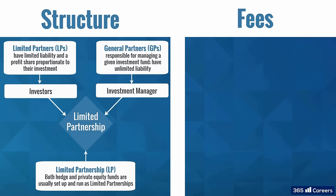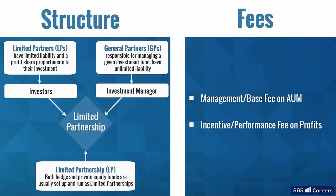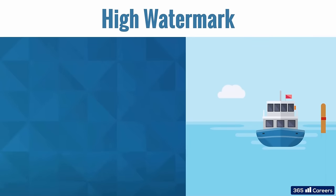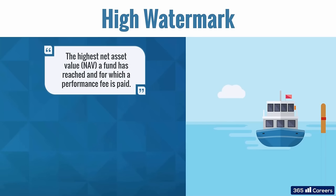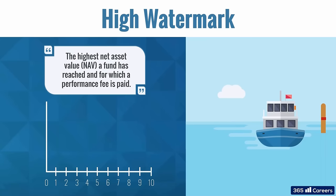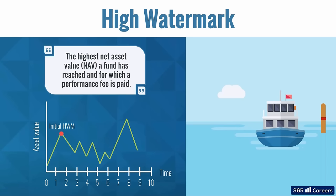The common fee structure of alternative investment funds includes a management or base fee and an incentive, or performance fee. The management fee is calculated annually on assets under management, or AUM. The incentive fee, also known as a hurdle rate, is usually calculated on profits above a certain level of return. Another widely used feature is the so-called high watermark. This is the highest net asset value, or NAV, that a fund has reached and for which a performance fee is paid. Setting a high watermark protects investors from paying fees on downside outperformance. It also ensures that they won't pay twice for the same increase in net asset value, or NAV.